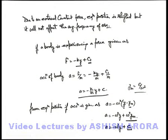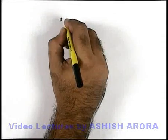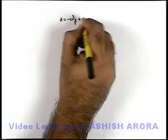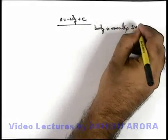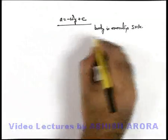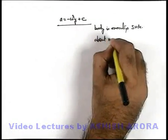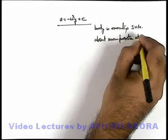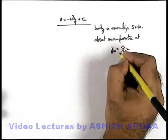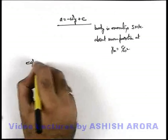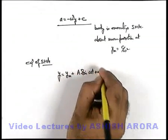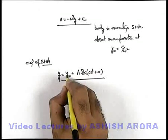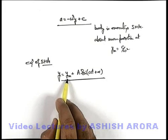We can also analyze the equation of SHM for this situation. If the acceleration of a body in motion is given as minus omega squared y plus c, this also confirms that the body is executing SHM about a mean position at yₘ equals c/omega squared. The equation of SHM can then be written as y equals yₘ plus A·sin(omega·t plus alpha), where yₘ is the shifted equilibrium position of the body due to the presence of the external constant force.